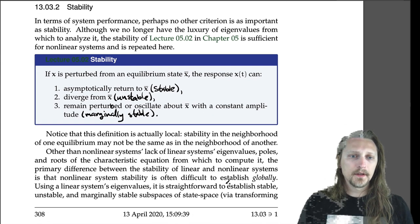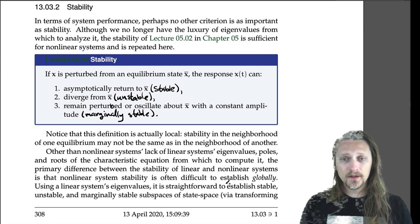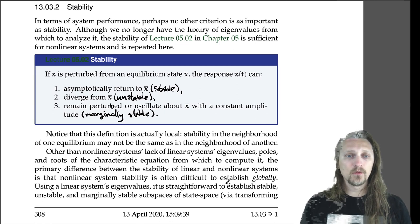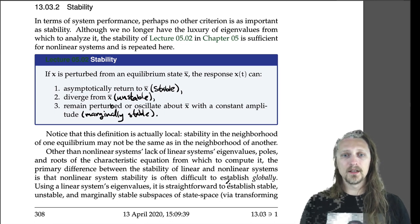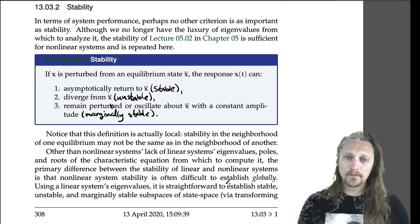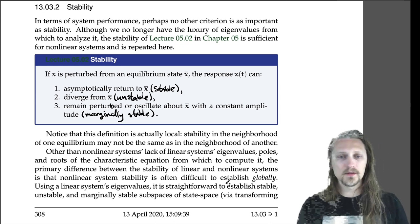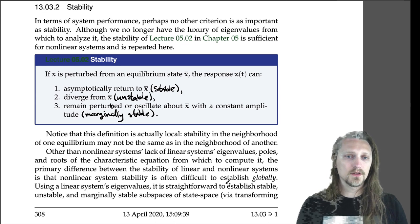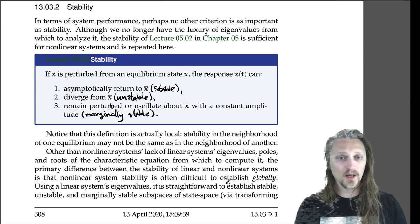Notice that this definition is actually local stability. The stability in the neighborhood of one equilibrium may not be the same as in the neighborhood of another. So just because one equilibrium in your system is stable doesn't mean that they're all stable.